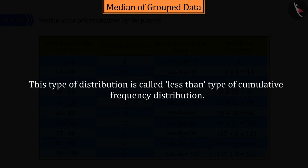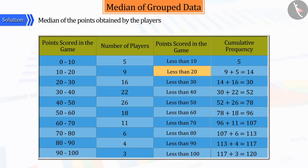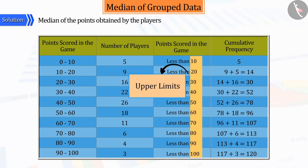This type of distribution is called the cumulative frequency distribution of the less than type, where 10, 20, 30, 40 and 100 are the upper limits of the corresponding class intervals.